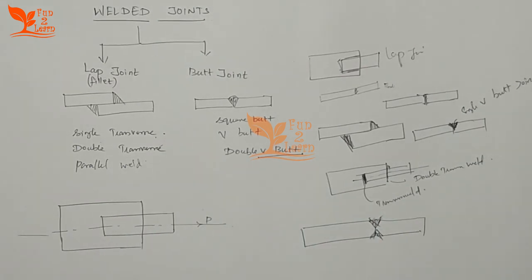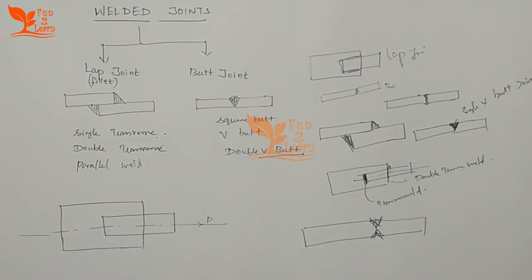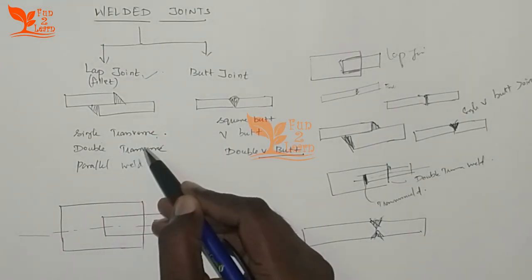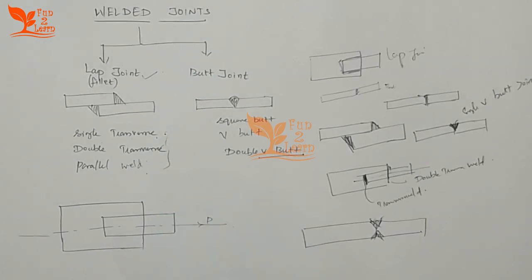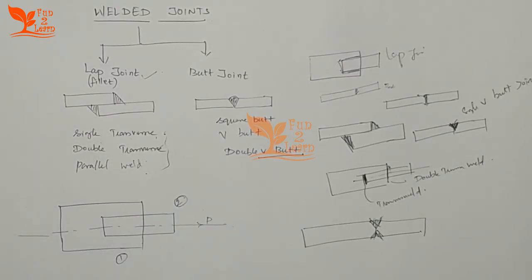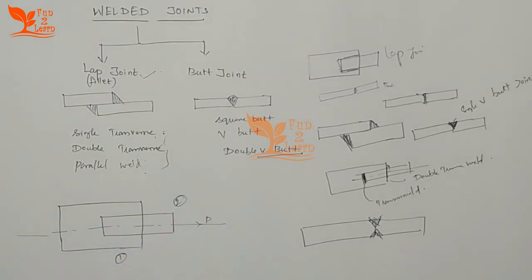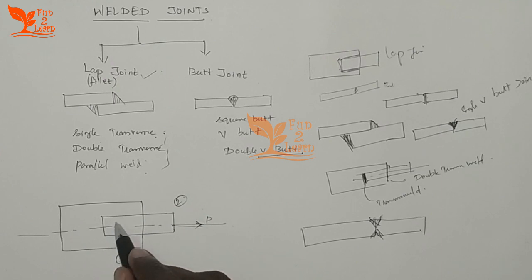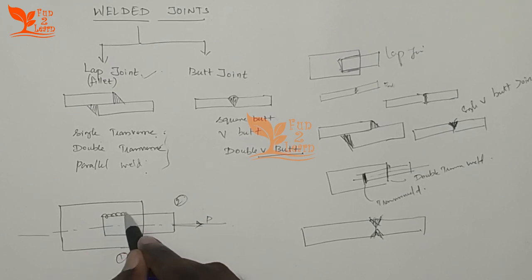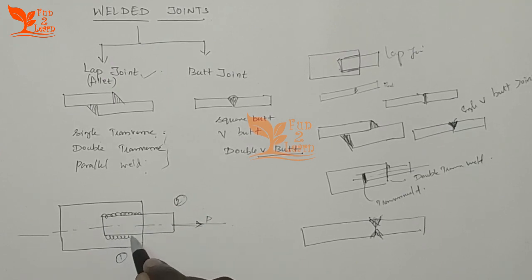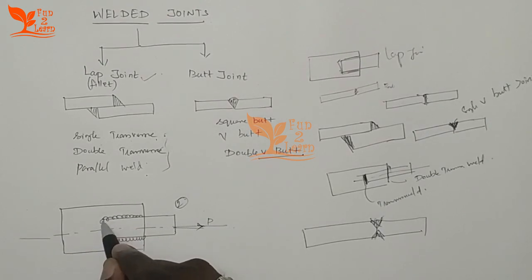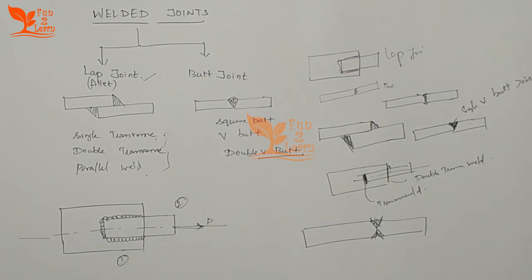Now let's concentrate on the lap joint. In the lap joint, we have single transverse welds, double transverse welds, and parallel welds, as well as combinations. Consider plate number 1 and plate number 2 with an overlap and a load applied. There is a parallel weld and transverse welds — this configuration is a double transverse weld.